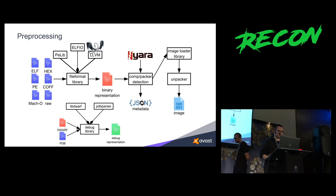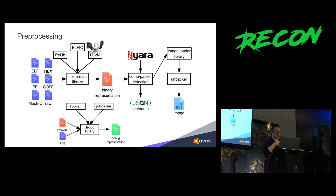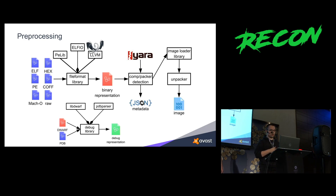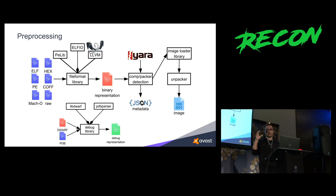The first part is preprocessing. It's the first stage of the decompilation. Its main goal is to take the input file and extract as much information as possible from it, and also abstract away all the differences in the different executable file formats, because PE, ELF, and Mach-O are all different. For this we use the file format library which takes the input file, parses everything it can, and outputs the universal binary representation. When we have this binary representation, we do compiler and packer detection. For this detection we use signatures and heuristics — signatures are written in Yara language so they can even be used outside of our project.